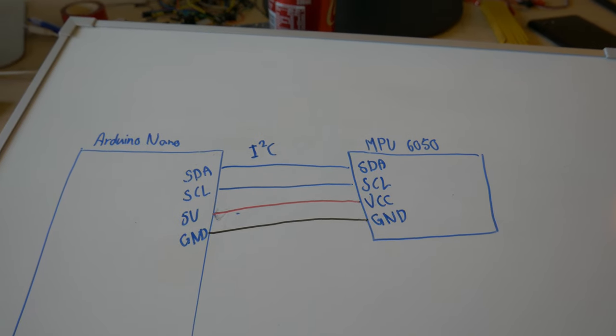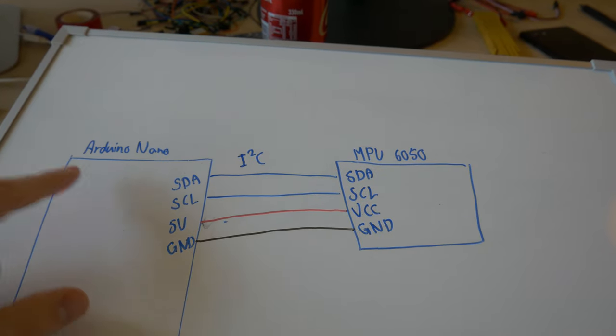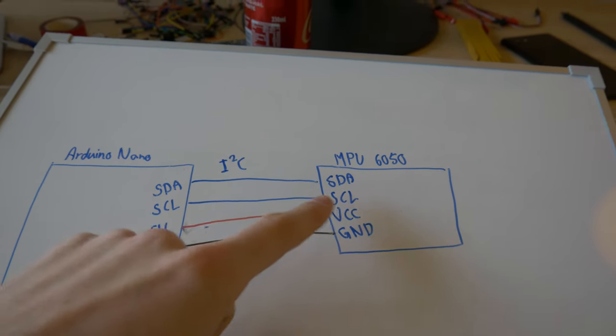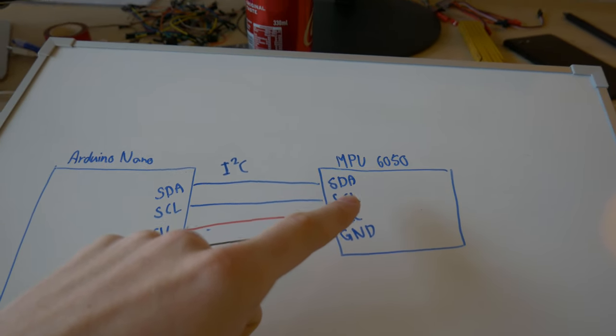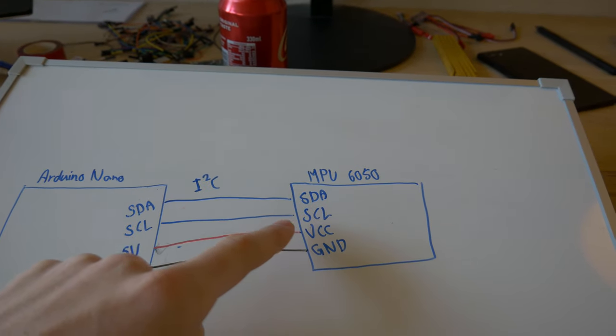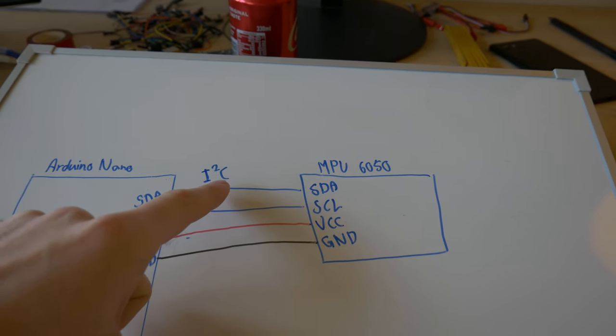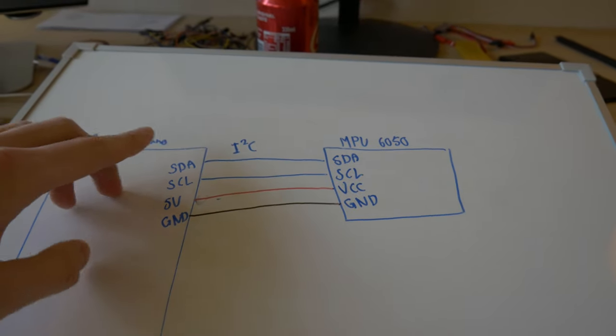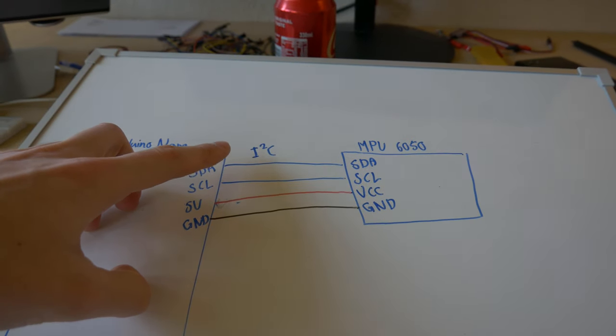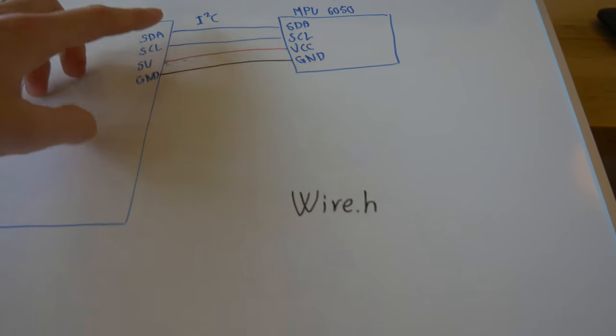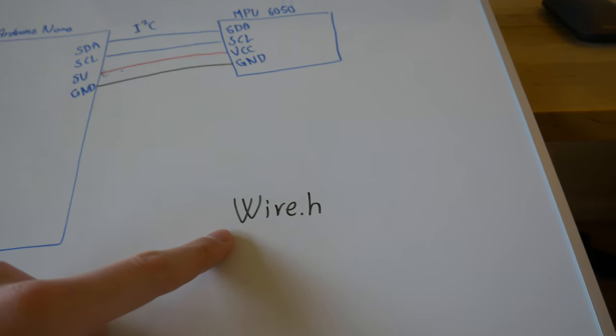The first question becomes how do we even send data from the Arduino Nano to the MPU6050. That is done using a protocol called I2C. In order to make the I2C communication easier I'm going to use the Arduino library called wire.h.